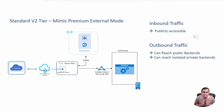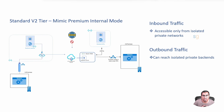By leveraging these features, Standard V2 not only mimics capabilities of the Premium tier's VNet external mode, but also provides a cost-effective and secure solution for a wide range of application scenarios. Now, let's look at whether we can achieve VNet internal mode. As we discussed, Standard V2's gateway has the capability to connect to network-isolated backend services, including the ability to reach on-premises backends.